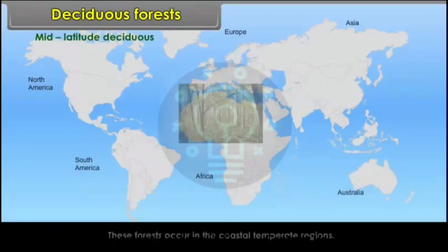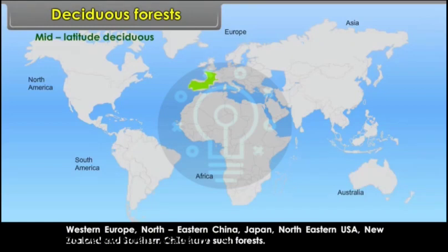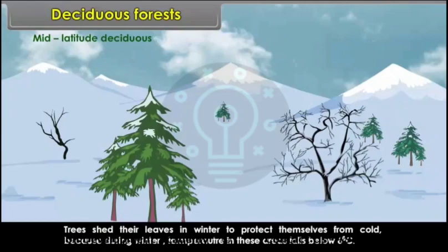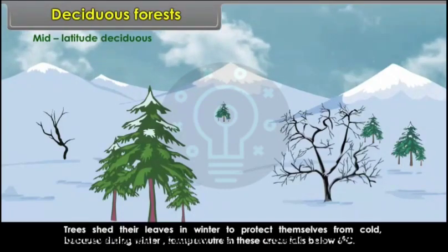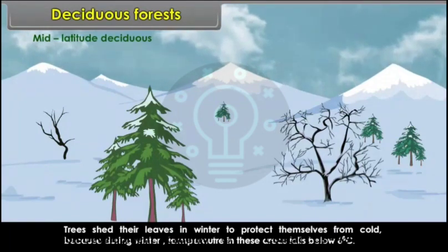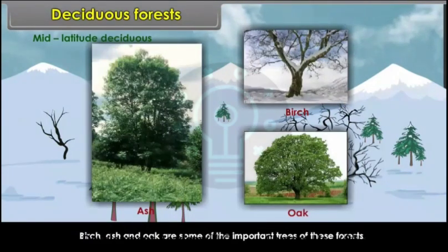Temperate deciduous forests occur in coastal temperate regions — Western Europe, Northeastern China, Japan, Northeastern USA, New Zealand and Southern Chile. Trees shed their leaves in winter to protect themselves from cold, as temperatures in these areas fall below 6 degrees Celsius during winter. Beech, ash and oak are some of the important trees of these forests.